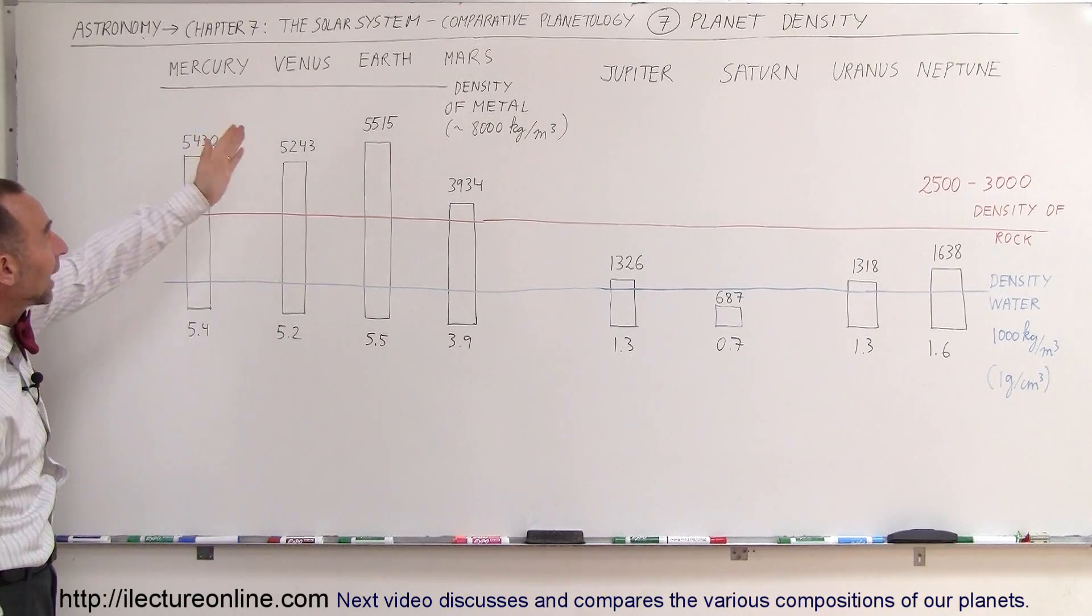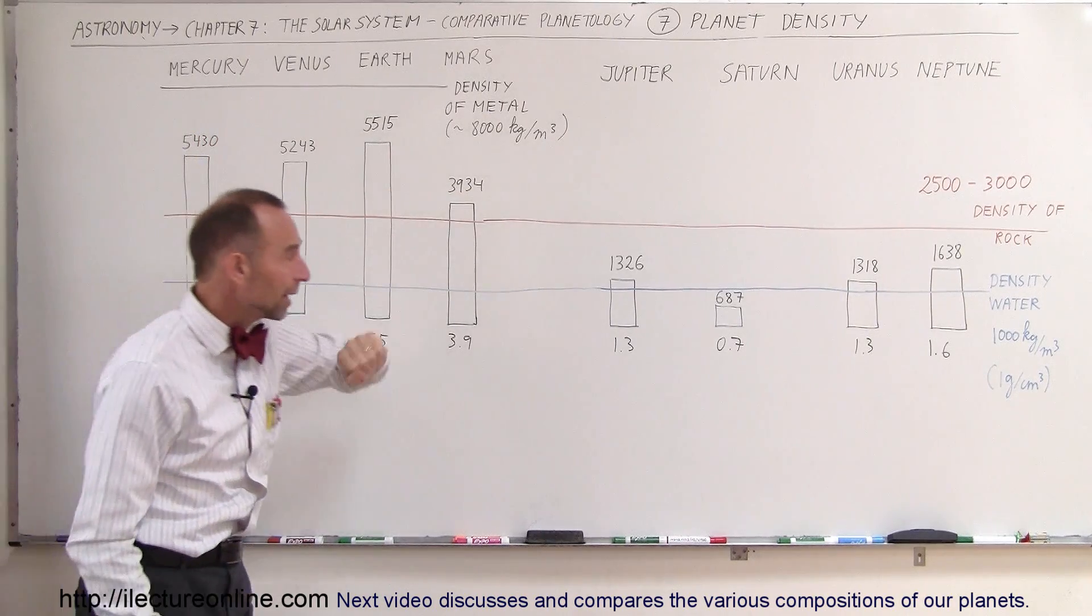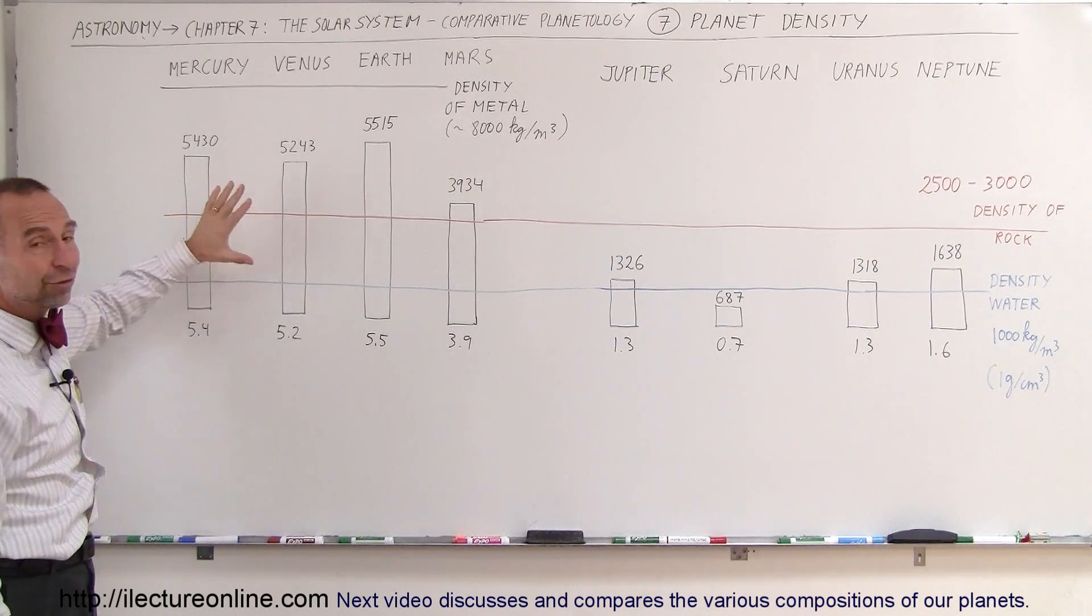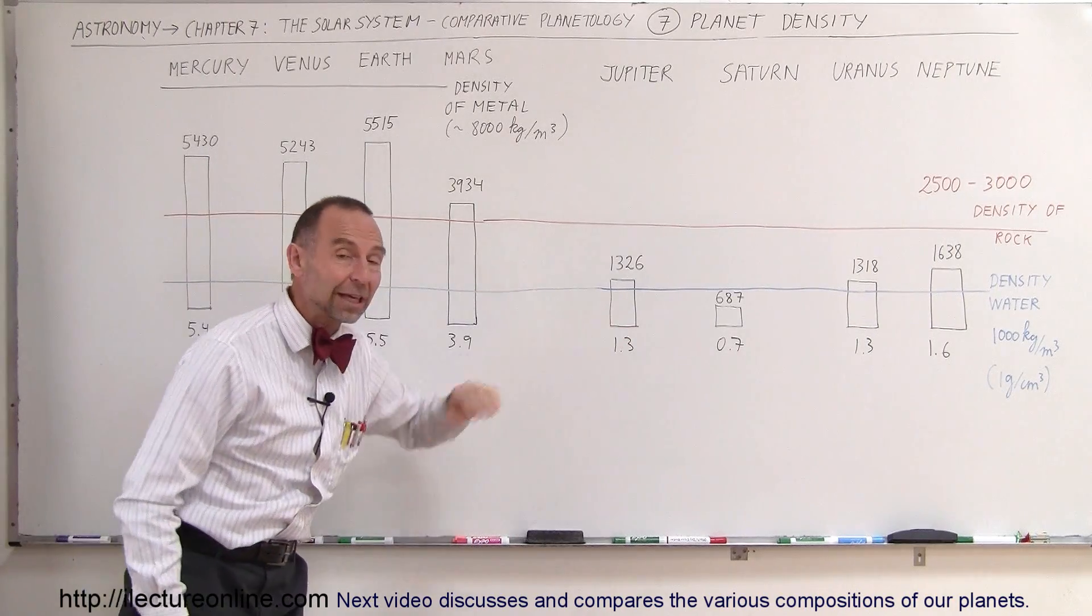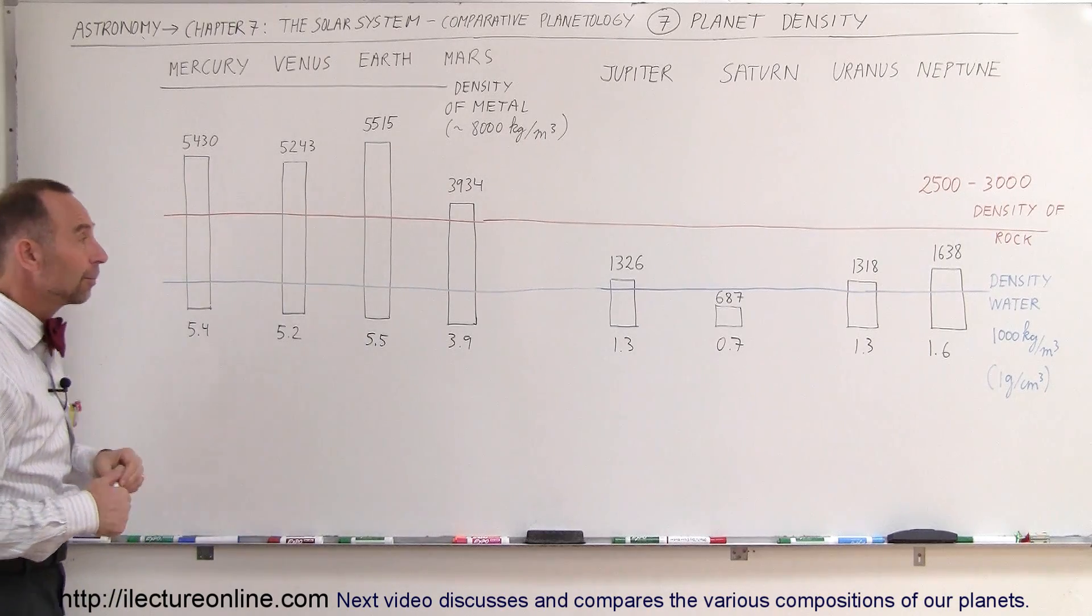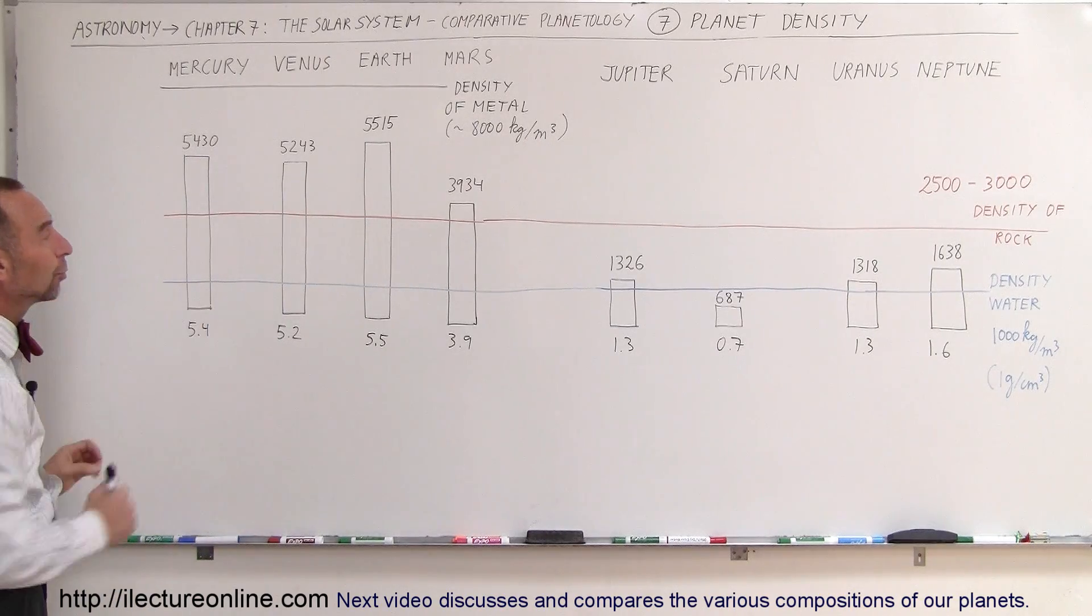Again we have the terrestrial planets, there's four of them, we have four gas planets. Notice that the density of the terrestrial planets is far greater than the density of the gas planets. You can see a big difference between the two and they're kind of grouped together.